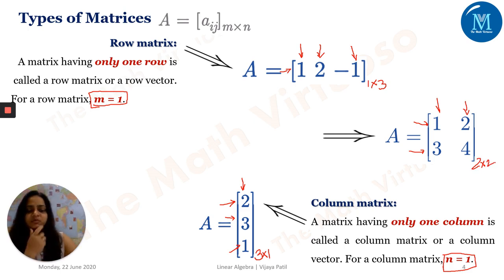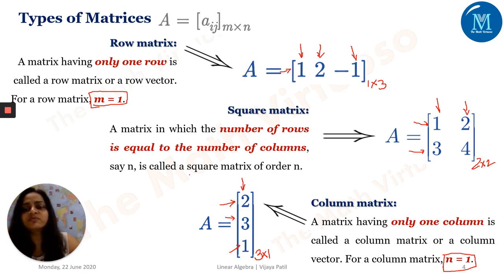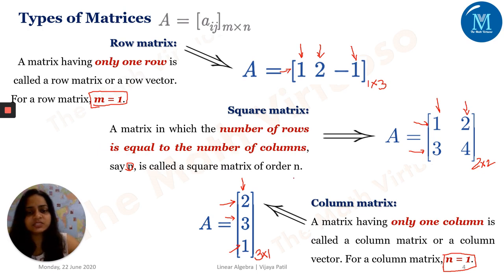A two cross two matrix is a square matrix. The definition of a square matrix is that the number of rows equals the number of columns — say n. When talking about a square matrix, it is sufficient to say it is of order n; no need to prescribe both rows and columns separately.